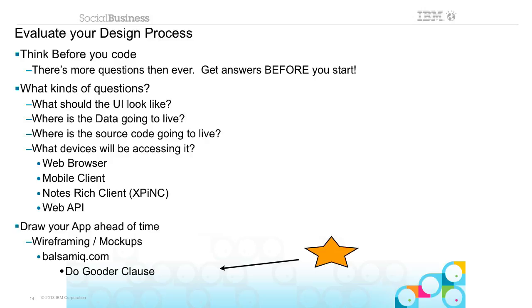There's a great website called balsamic.com, which is a nice wireframing website. If you're a blogger or someone who shares with the community, they still have on their website what they call a do-gooder clause — you can send them an email and in theory get a free license to their software if you give back to the community. I did this a couple years ago and have a free license to the desktop version of Balsamic, which I use, and I was very thankful.